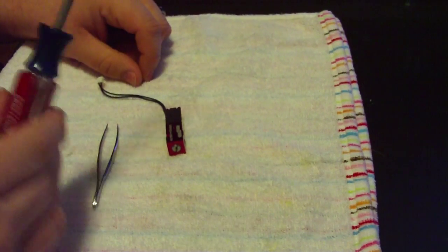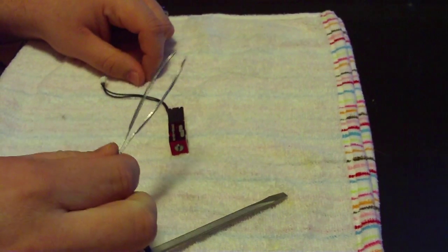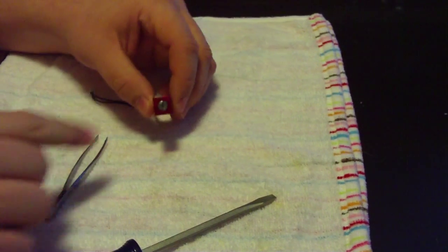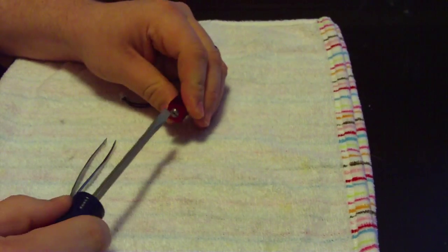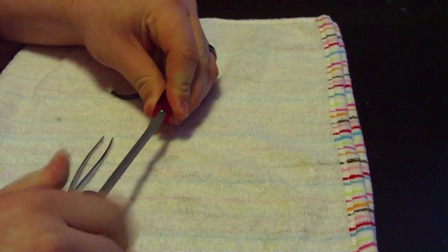We're going to need two things to do this: a screwdriver and a pair of tweezers. On the non-wired end, take your screwdriver and remove the retaining screw.